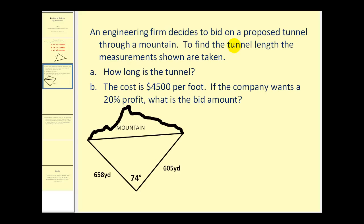An engineering firm decides to bid on a proposed tunnel through a mountain. To find the tunnel length, the measurements shown are taken. Part A: how long is the tunnel? Part B: the cost is $4500 per foot. If the company wants a 20% profit, what is the bid amount?